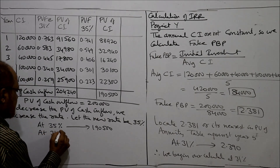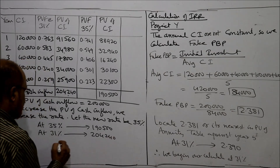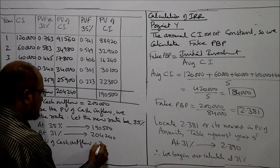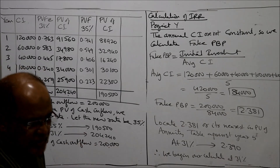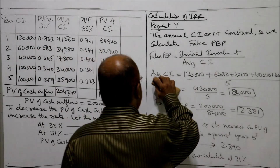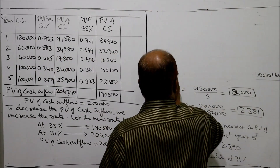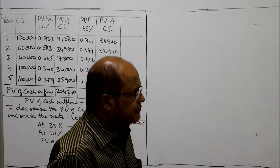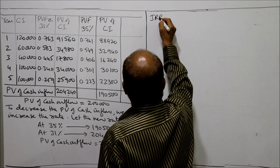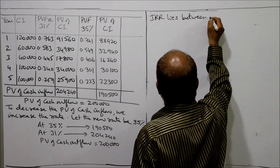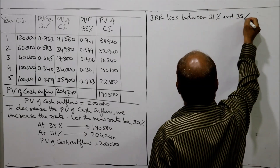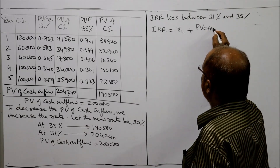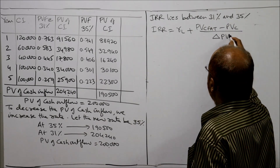At 31% we got two lakh four thousand two hundred forty, and at 35% we got one lakh ninety thousand. PV of cash outflow equals two lakh. One value is more than two lakh and the other is less than two lakh, so IRR lies between 31% and 35%. The actual IRR is computed by the interpolation formula: RL plus (PV CFAT minus PVC) divided by delta PV, into delta R.